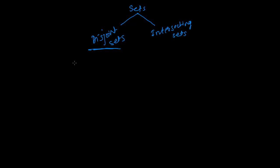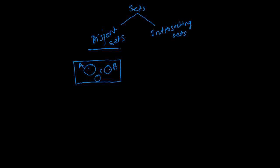So what are disjoint sets? In a Venn diagram, if you are drawing the diagram and the sets are completely independent — this is set A, this is set B, this is set C — and none of the elements of A is found in B, and similarly none of the elements of B is found in C. The elements of A are just found in A, elements of B just in B, elements of C just in C. In that case we say these are disjoint sets.